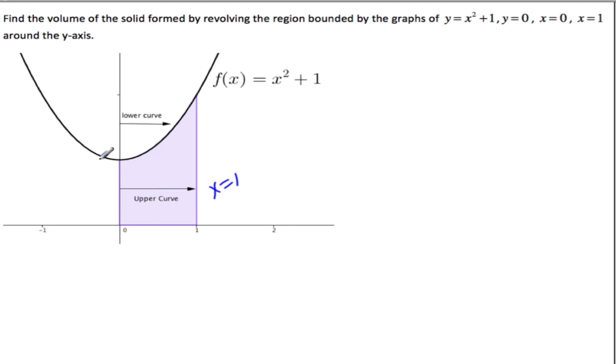And then we're going to subtract this bowl out of the top of it. We're going to revolve this curve x squared plus 1 around the y-axis as well, and so we'll cut that out of the top of our cylinder.